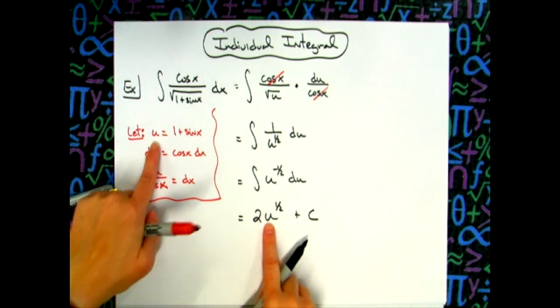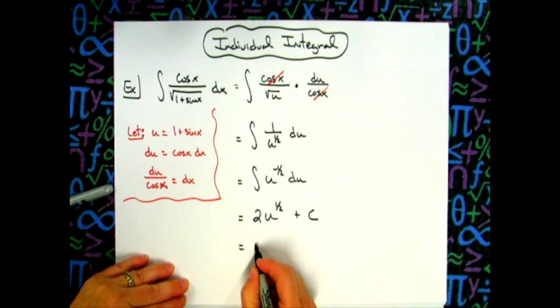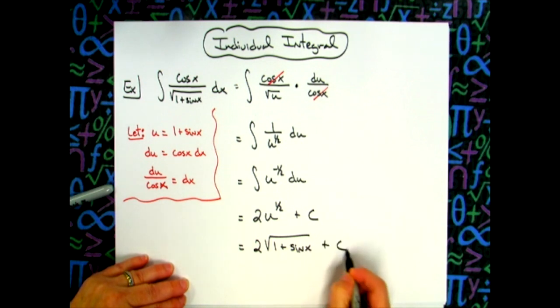Last step would be to take u and replace it. And when I do that, then I will automatically turn that one half back into a radical. So we'll do that all in the same step. We'll have two times the square root of one plus sine x and then plus c.